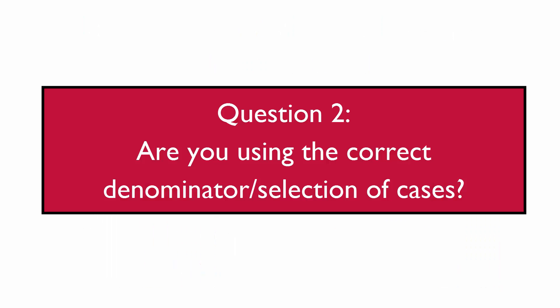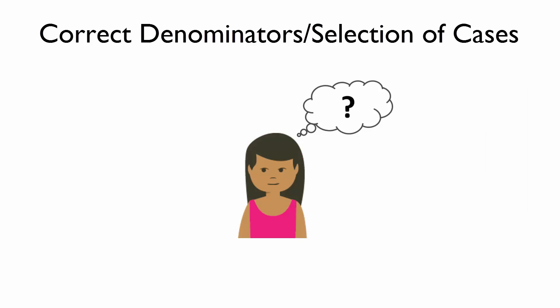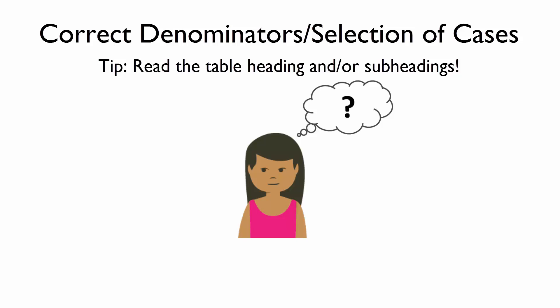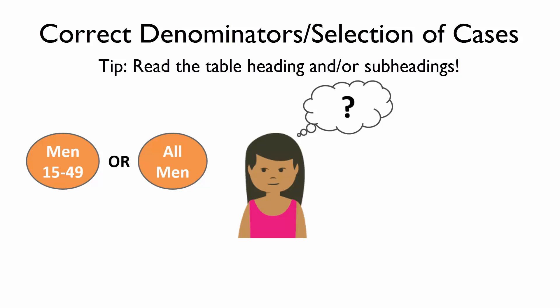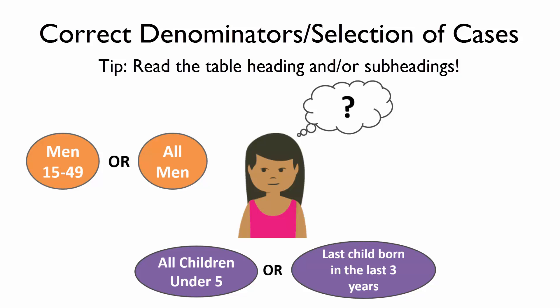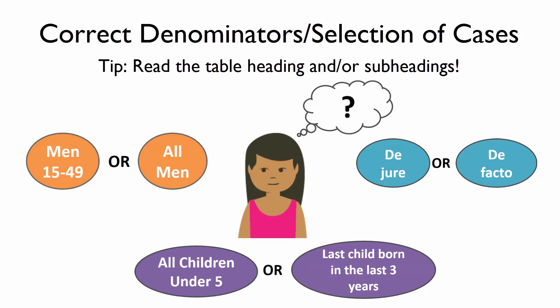Another question to ask if you aren't correctly matching DHS final report tables is: am I using the correct denominator, or have I selected the correct cases? Even once you are using the correct file, you could still be using an inappropriate denominator or not properly selecting the correct cases. The best way to identify your denominator is to read the table heading and/or subheadings. For example, some tables have limited age ranges such as men 15-49 instead of all men interviewed. Or when looking at children, is the denominator all children under 5? Last child born in the last 3 years? De jure or de facto? These are all questions you should be asking yourself when trying to match the correct denominator.